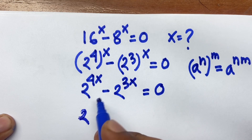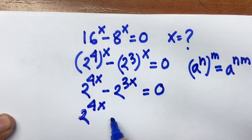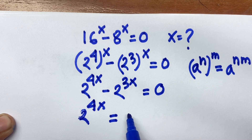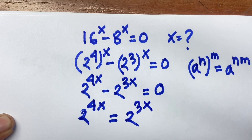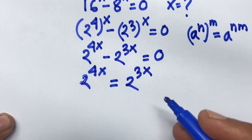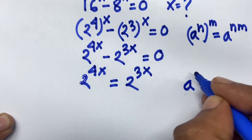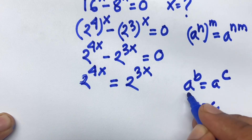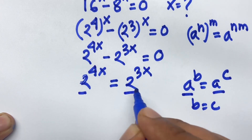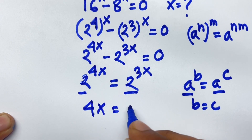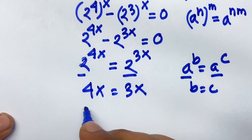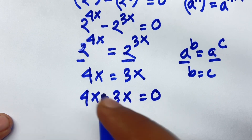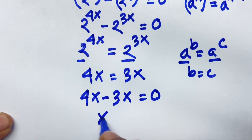Now, here is 2 to the power 4x. I just move this 2 to the power 3x to the right side. So, we find here is 2 to the power 4x is equal to 2 to the power 3x. Now, look — the base is the same. We know that if a to the power b equals a to the power c, then b equals c because the base is the same. So, here I can say 4x is equal to 3x. Now, 4x minus 3x is equal to 0, and 4x minus 3x is equal to x, so x equals 0.